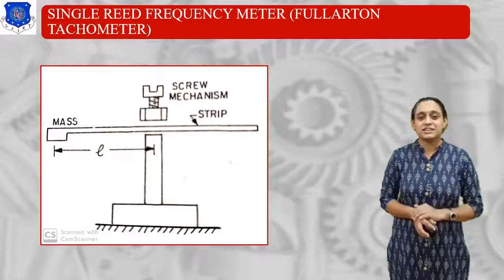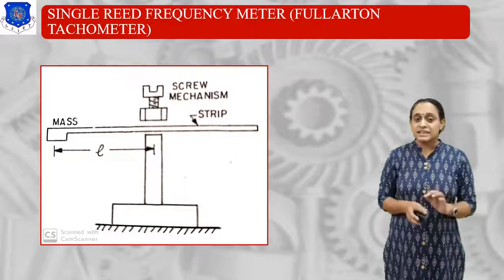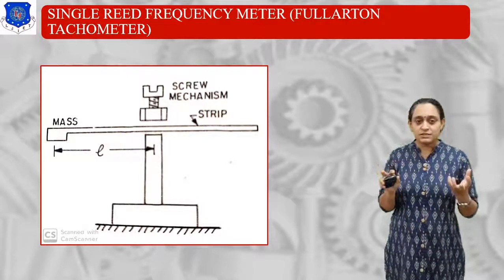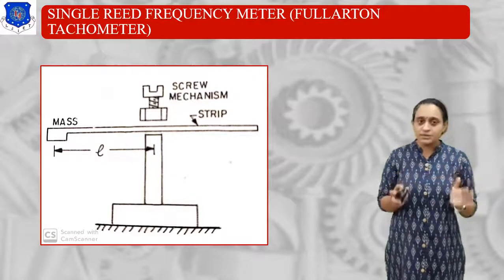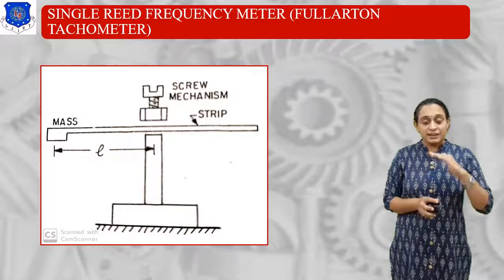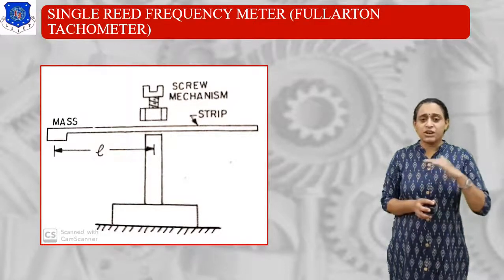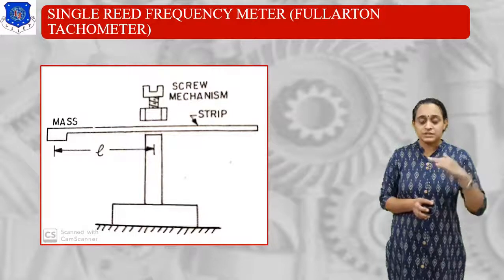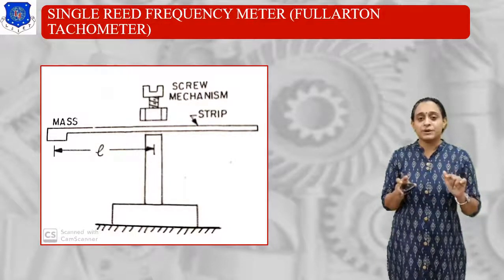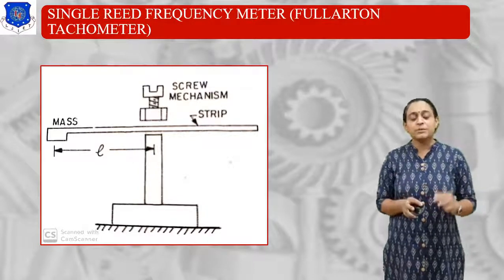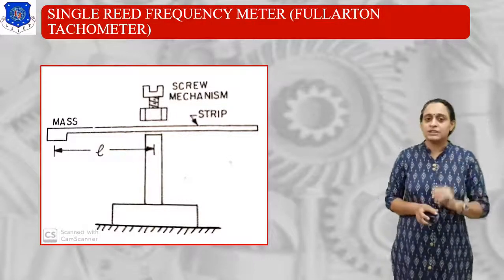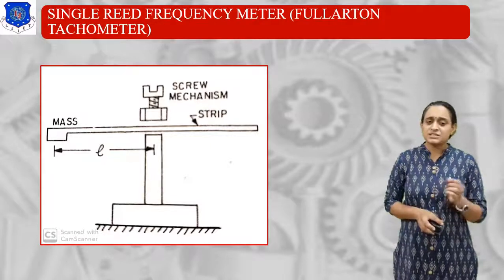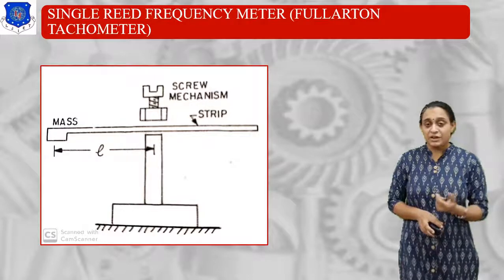Next, the simplest one: the single reed frequency meter. This can read the frequency of the system. The strip end is attached with the mass and fixed with a screw. This system is placed on the machine. If the machine vibrates or has some base excitation, the mass attached at the foremost part will vibrate and the strip will vibrate. The strip is attached with a sensing system and we can easily measure the amplitude of the system. This is a very simple method used for measuring vibration.